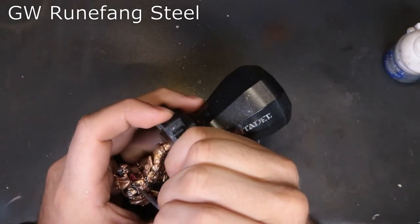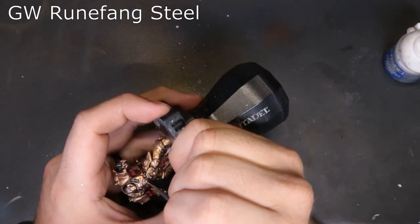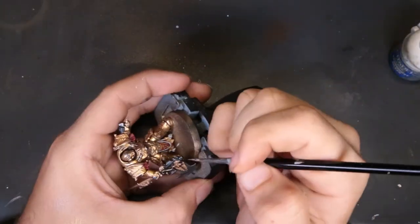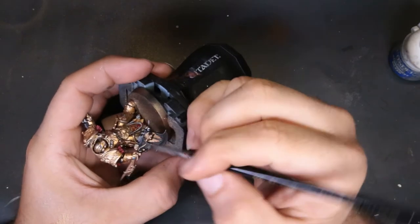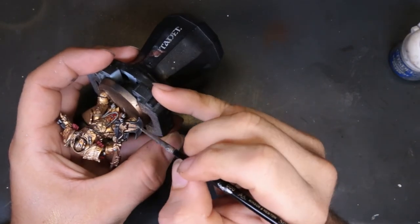So next we're coming through with Runefang Steel. All we're trying to do here is the same stuff. We're trying to highlight up our metallics. So we had our previous color washed down all of that. Now we come through with this Runefang Steel, try and highlight it up. You can definitely see on that cylindrical barrel, when I added the paint, it just boom, brightened it up a thousand percent.